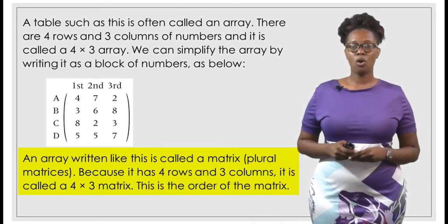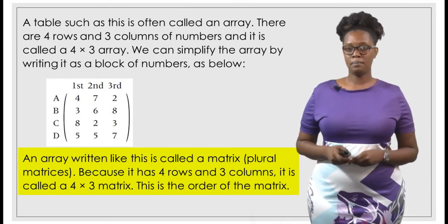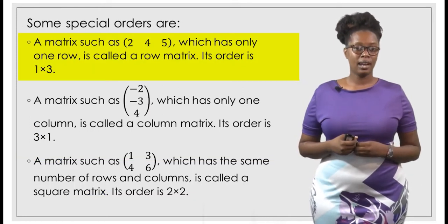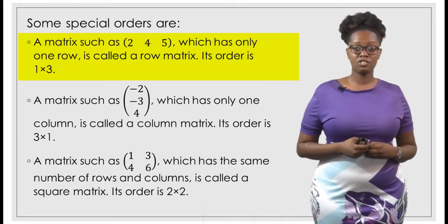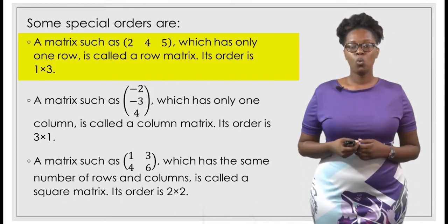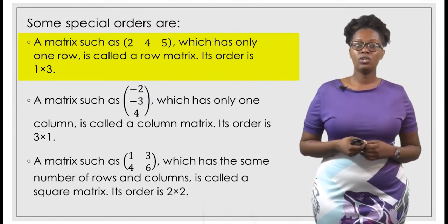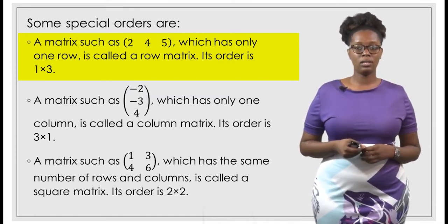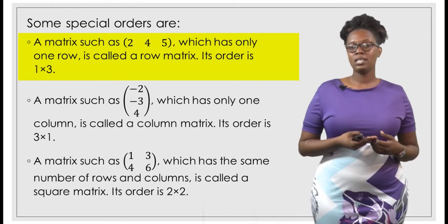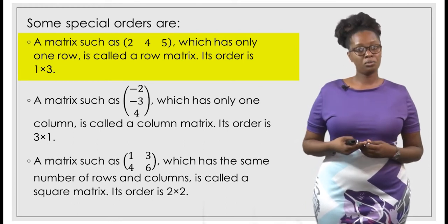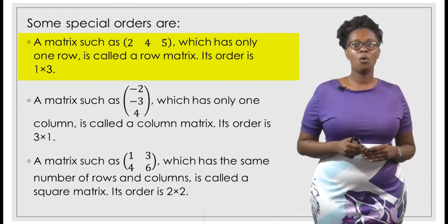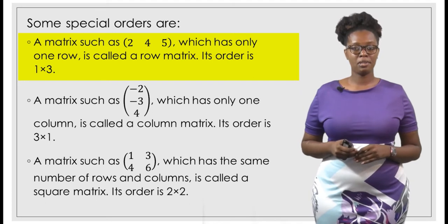Some special orders: a matrix such as 2, 4, 5, which has only one row, is called a row matrix. And because it has one row but three columns, this is a one by three matrix.